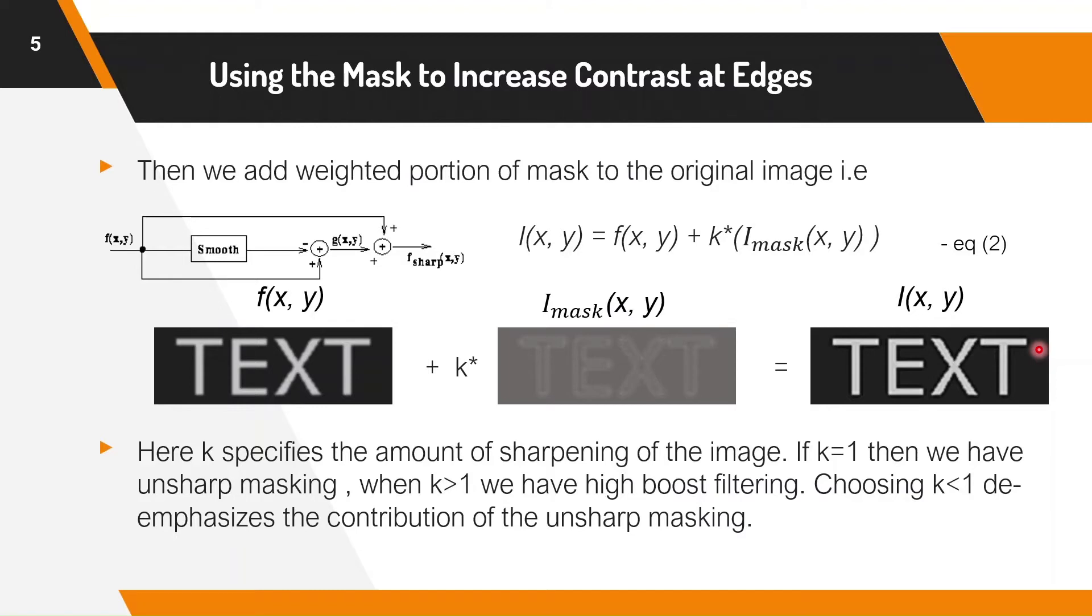If k is 1, we have unsharp masking. When k is greater than 1, we have high boost filtering. Choosing k less than 1 deemphasizes the contribution of the unsharp masking.